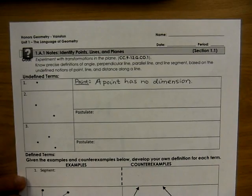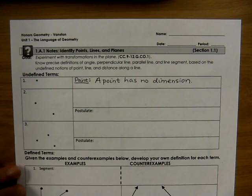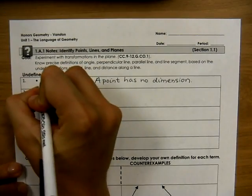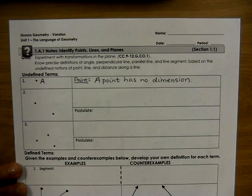And then when we label points in geometry, we label them in a very specific way. We have to label them with a capital letter. So I could label this point, point A. I cannot use a lowercase letter. I can't use a number. I have to use a capital letter.